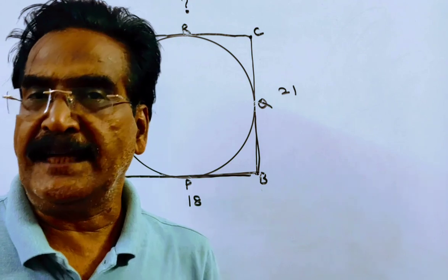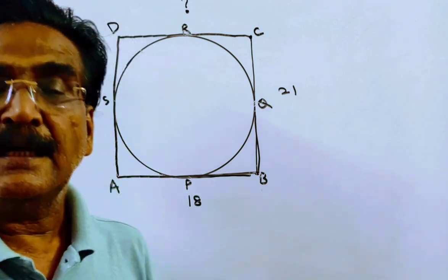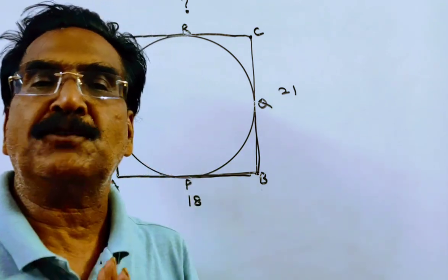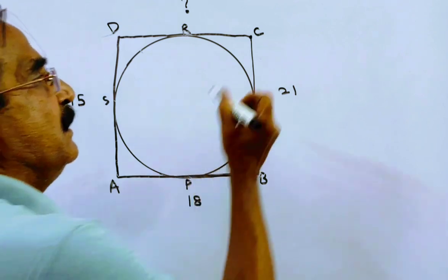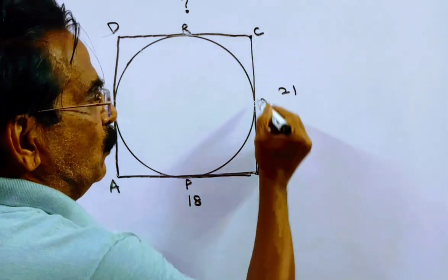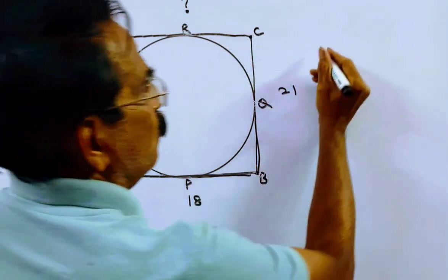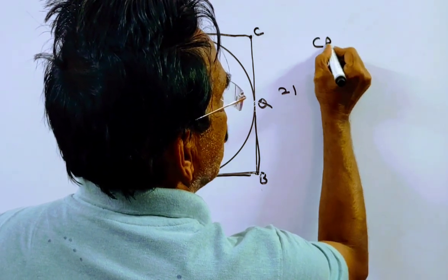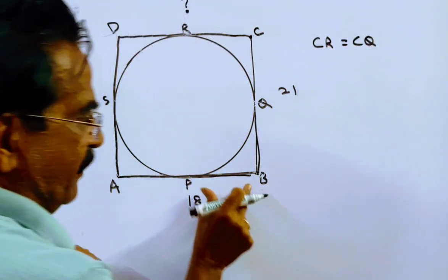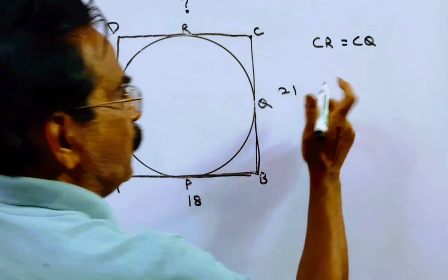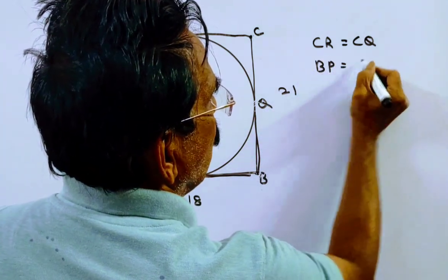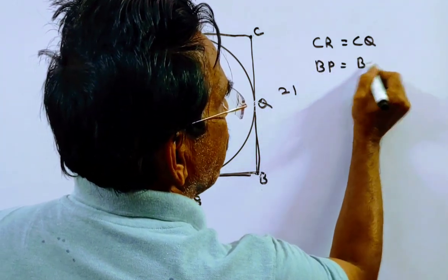Friends, we know one important fundamental: tangents drawn to a circle from an outside point are equal. That implies C,R is equal to C,Q. In the same way, B,P is equal to B,Q.